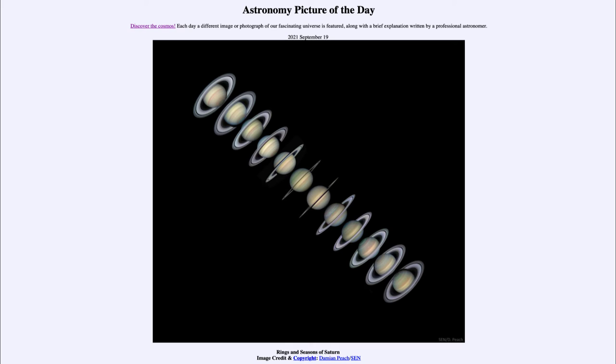Saturn, on the other hand, takes about 30 years to orbit our sun. A quarter of that means we'd be looking at about seven and a half years for each season.